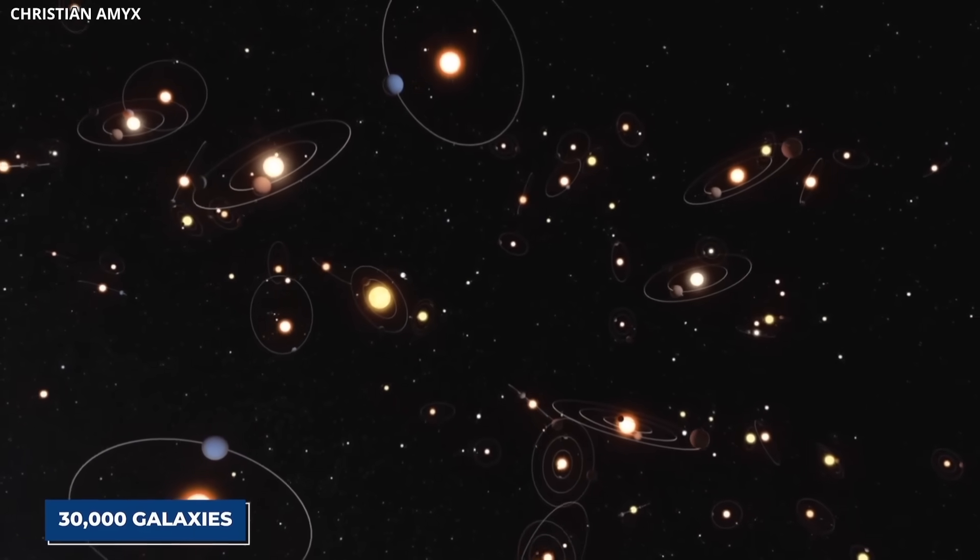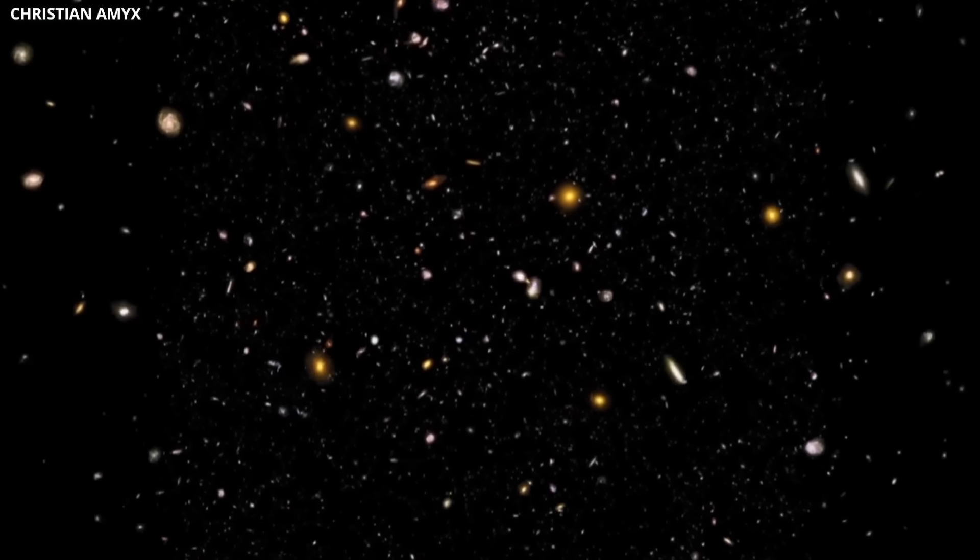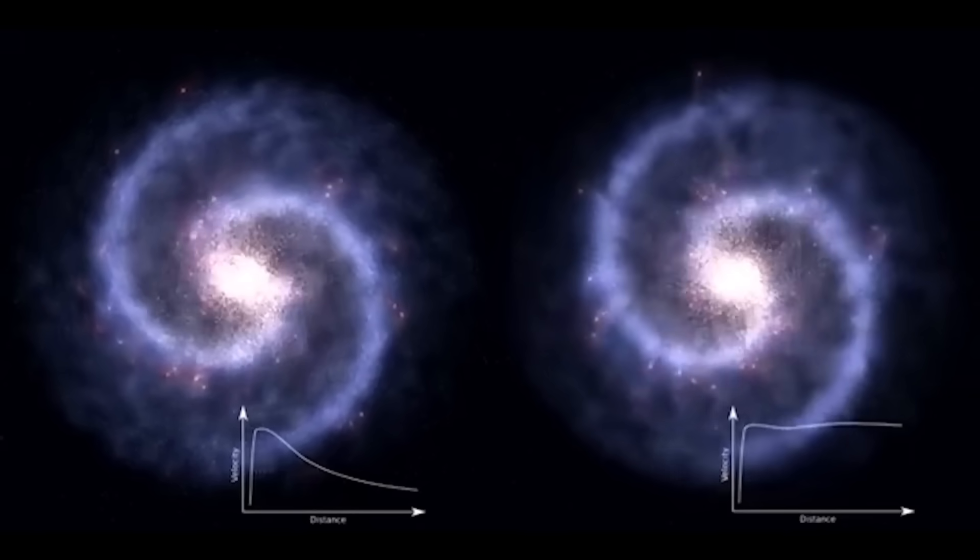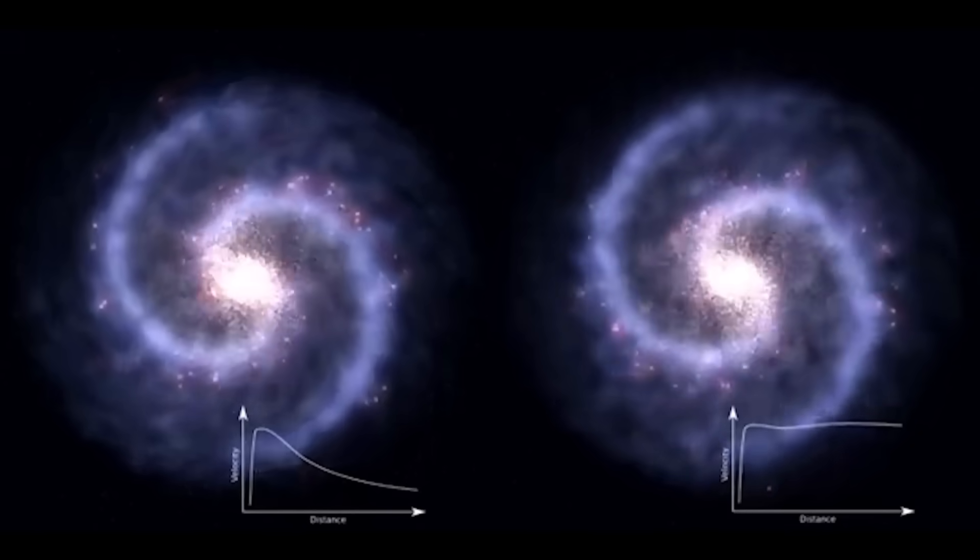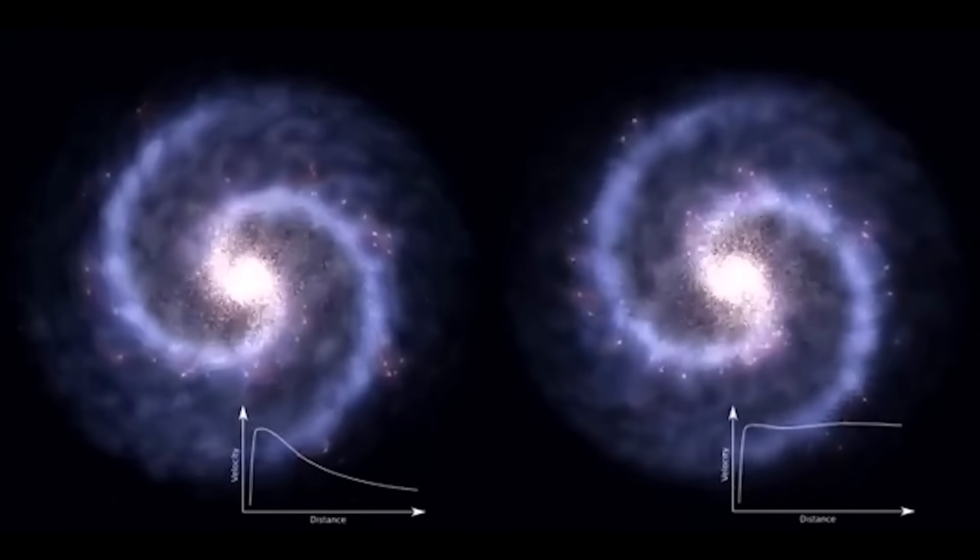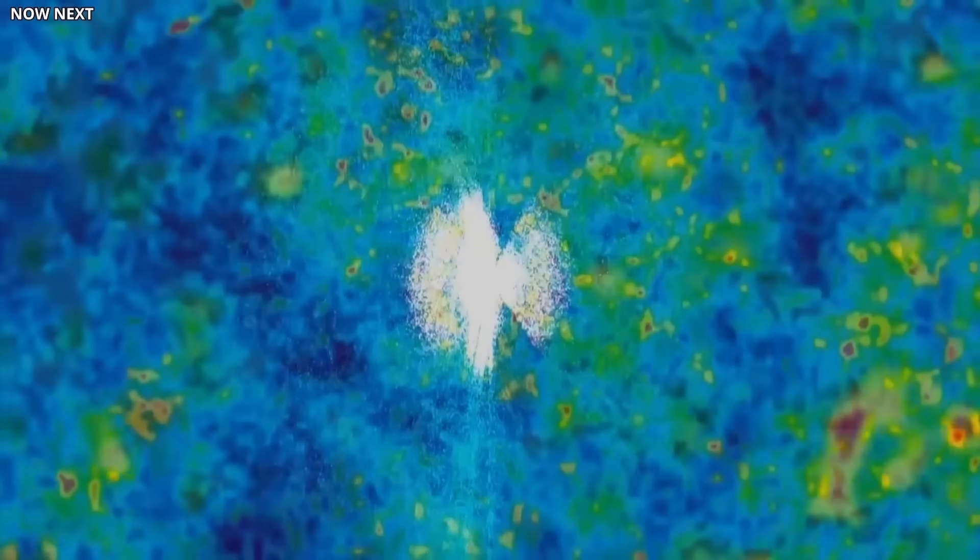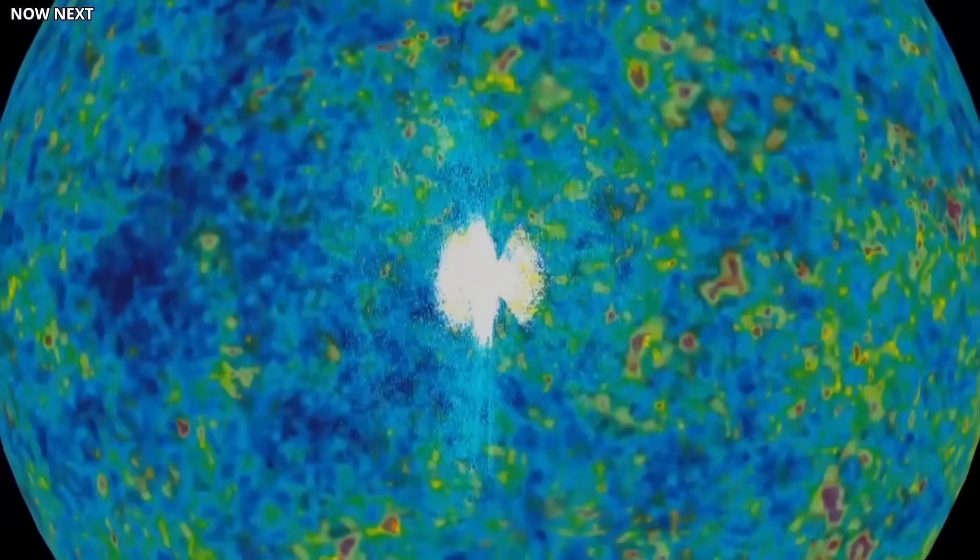To support this idea, Shamir's team measured the redshift in more than 30,000 galaxies. The results were astonishing. The further back in time they looked, the larger the imbalance in galaxy rotation became. This means that in the universe's earliest stages, galaxies were even more strongly aligned in their rotational direction.